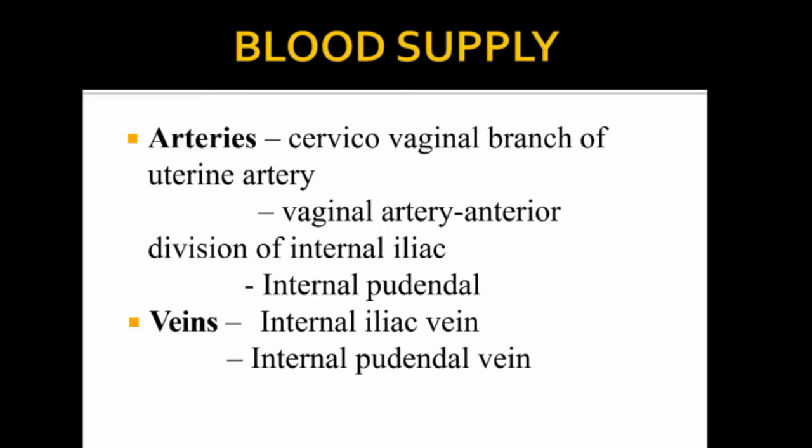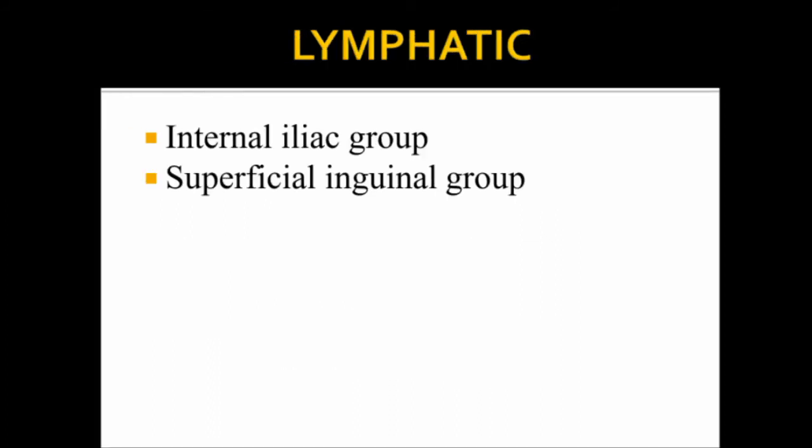The blood supply of the vagina comes from the cervical and vaginal branches of the uterine artery and the internal pudendal artery. The lymphatics drain to the internal iliac group, and the superficial inguinal group.